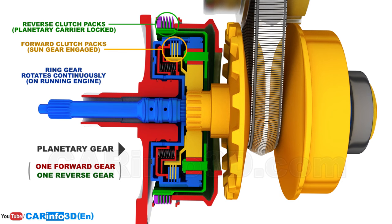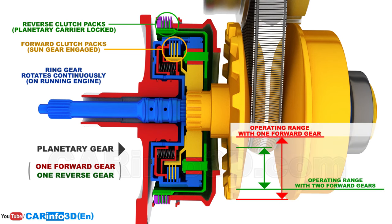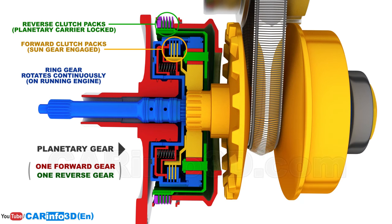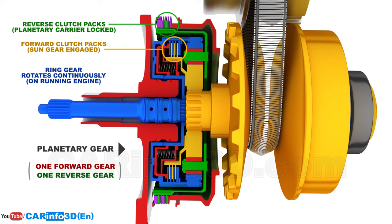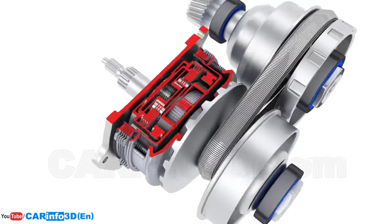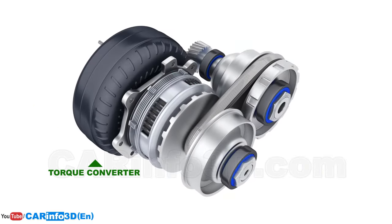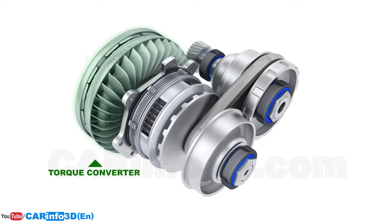Modern vehicles frequently have a planetary gear with two forward speeds, preventing the use of the most loaded extreme positions of the belt and allowing for more dependable CVT operation. The CVT can employ a number of configurations to link the engine to the transmission. The planetary gear clutch packs, for example, can also function as a wet clutch connecting the engine and the transmission. However, a separate torque converter is more commonly used. Other options are quite rare.